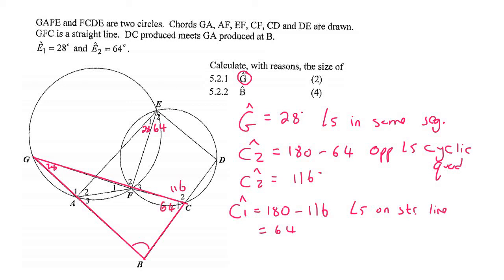Now we can use the sum of angles in the triangle, which should make 180. So we could say that angle B is equal to 180 minus 64 minus 28, and that's because of sum of angles in a triangle. And so if we had to work that out, we would get an answer of 88 degrees.